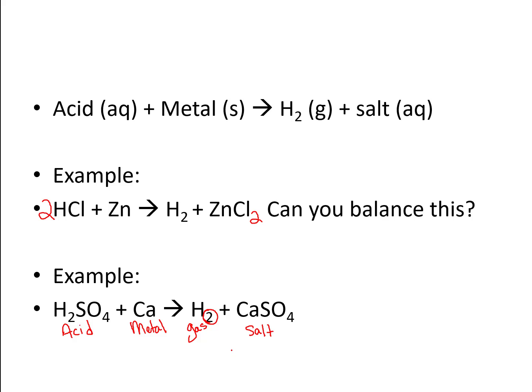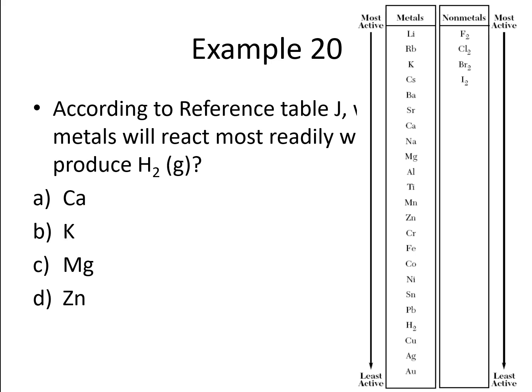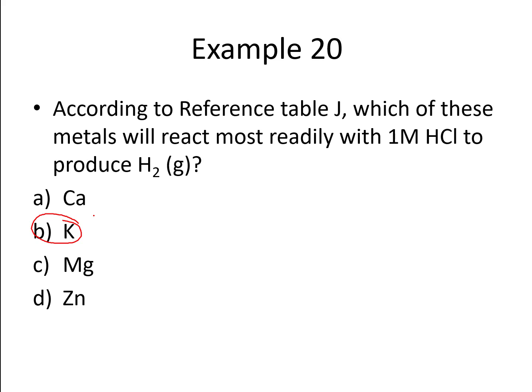Let's do a few practice problems with these. And you're definitely going to want your reference table out if you don't have it out already. So example 20, according to reference Table J, which of these metals will react most readily with one molar hydrochloric acid to produce hydrogen gas? I'm going to give you a moment to try to solve this problem. So if we are looking for the metal that would react most readily, we're going to go to Table J and find the metal on our multiple choice list that is closest to the top. And if you do that, your best choice is potassium. Potassium is third down from the top. It's only superseded by lithium or rubidium in terms of reactivity on Table J.